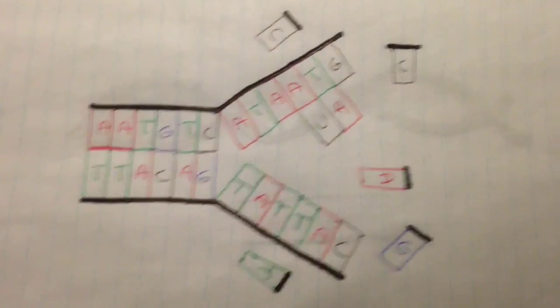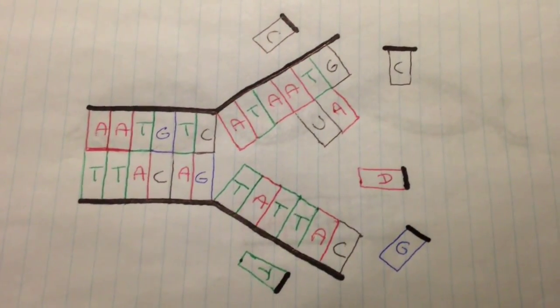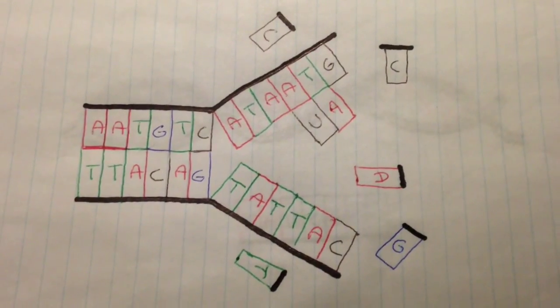After the DNA strand is unwinded and unzipped, free-floating nucleotides attach to one of the strands and make a copy.